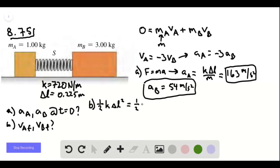This is equal to one half of ma, just calling m, va final squared, which we'll just call v.